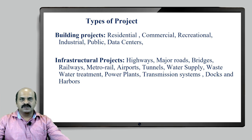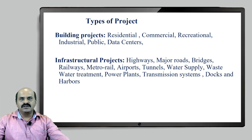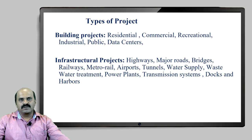Moving attention to infrastructure projects, which includes highways, major roads, bridges, railways, metro rails, airports, tunnels, waterways, wastewater treatment, power plants, transmission systems, docks and harbours. From this, you will understand the ways under which automation can be applied to all these projects. Our attention has to be given to the categorization of the project, and based on its needs, as the customer requirements are going to vary based on the type of project. That is why categorization is important, then customer identification, stakeholder involvement — everything has to be seen accordingly, so you will be in a better position to decide the automation strategy for that type of project.